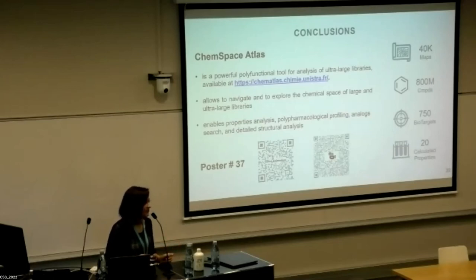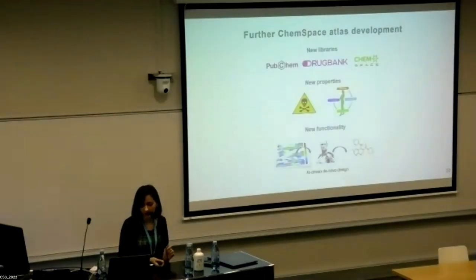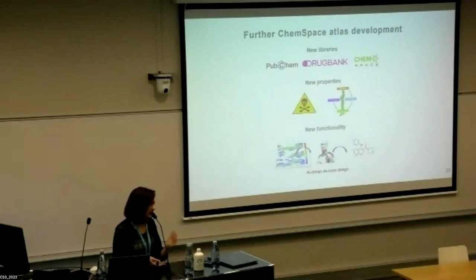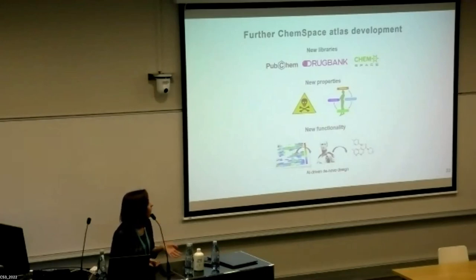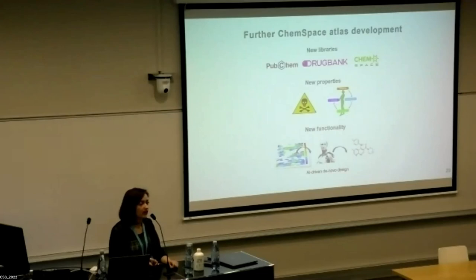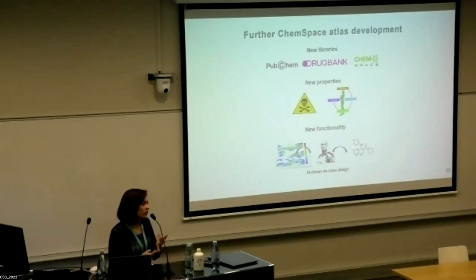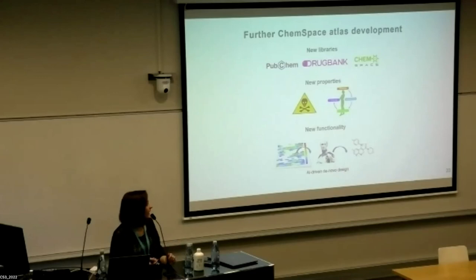Further developments for ChemSpace Atlas include adding new libraries — the easy part — by projecting new compound collections like DrugBank, PubChem, or the newly added Chemitech National library done by Polina Olenyeva, an M2 student I supervised this year. We can also add new properties such as new targets, toxicity prediction, or ADME properties, though this requires more work on the models. New functionality can also be implemented.